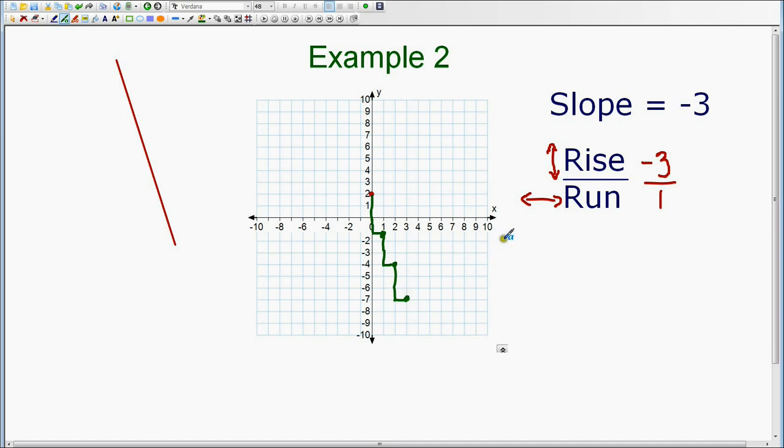If the rise were positive, then you would go up. And if the run were negative, then you would go left.